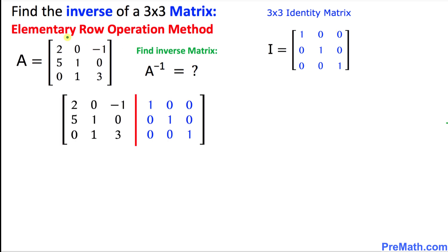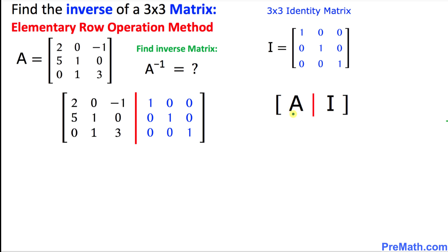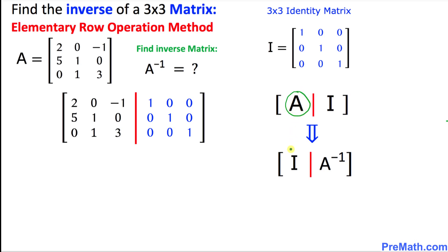Now we are going to start working on elementary row operations. The very first thing is to put down an augmented matrix. The left-hand side is the same as matrix A, and on the right-hand side of the demarcation bar — represented by a red bar — is the identity matrix. Our task is to convert this A matrix into an identity matrix, and then the right-hand side will become our inverse matrix.